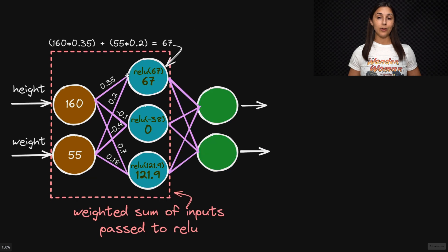Now recall for any given fully connected layer present within a network, that the output of any node is going to be the weighted sum of its inputs. So for this example, we have 160 multiplied by 0.35, this weight that is connecting this input to the node, and then we add that to the input of 55 multiplied by 0.2. So this weighted sum is going to give us 67.